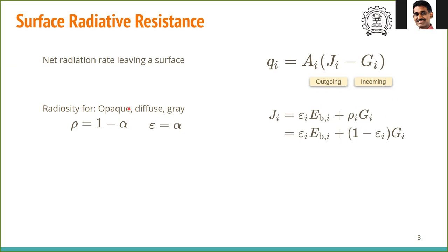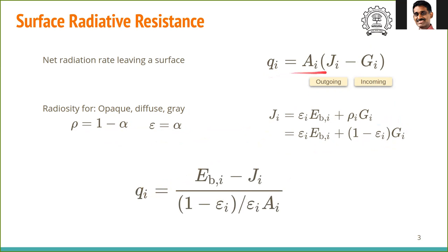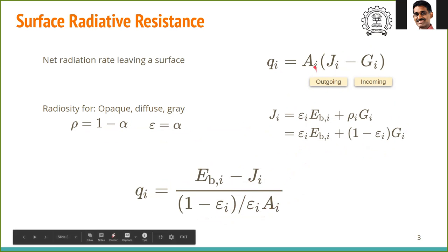Note that we have made assumptions of opaque, diffuse, and gray surfaces. Opaque means reflectivity equals 1 minus absorptivity alpha. Diffuse and gray means epsilon equals alpha. Under these assumptions, rho_i becomes 1 minus alpha_i, and since alpha_i equals epsilon_i, rho_i becomes 1 minus epsilon_i. Substituting g from this expression gives us a simplified form for qi.